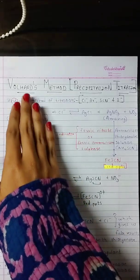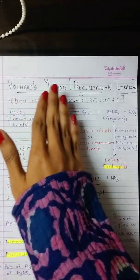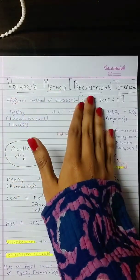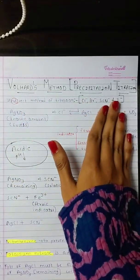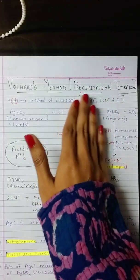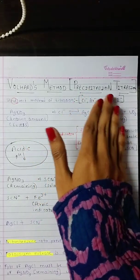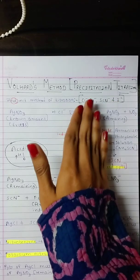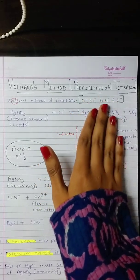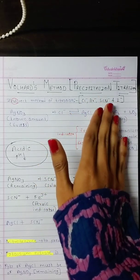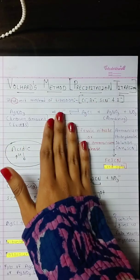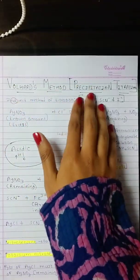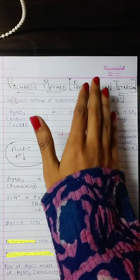Today we will be discussing Volhard's method. Volhard's method is also known as precipitation titration. I have already made a separate video on precipitation titration where you will get a detailed understanding. Right now, I will be giving you a basic idea on what precipitation titration is.